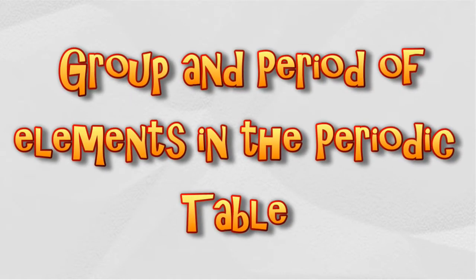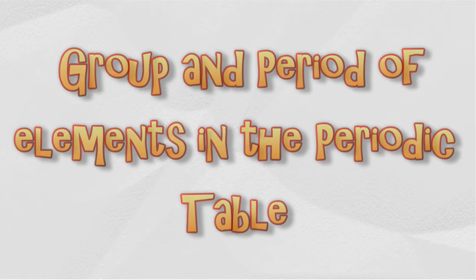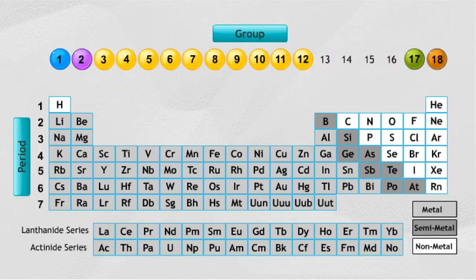Grouping the elements in a systematic order in the periodic table can help people easily identify the characteristics of the element, enabling people to predict the characteristics of an element, and also providing an easier understanding of the relationship between various elements.